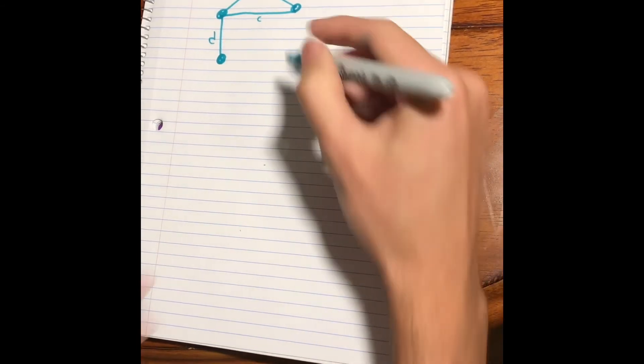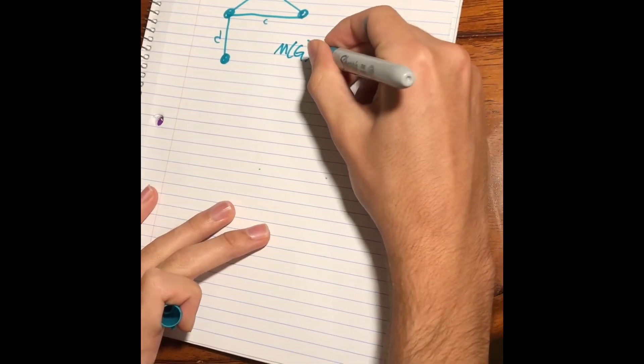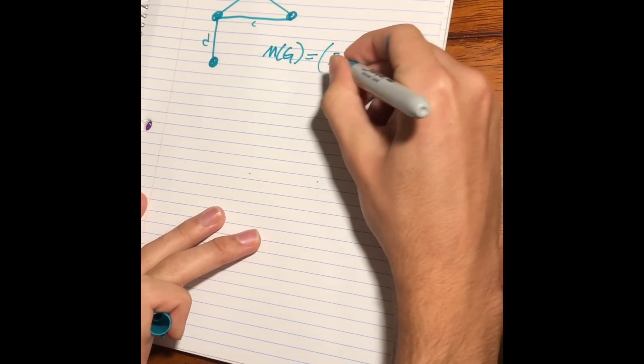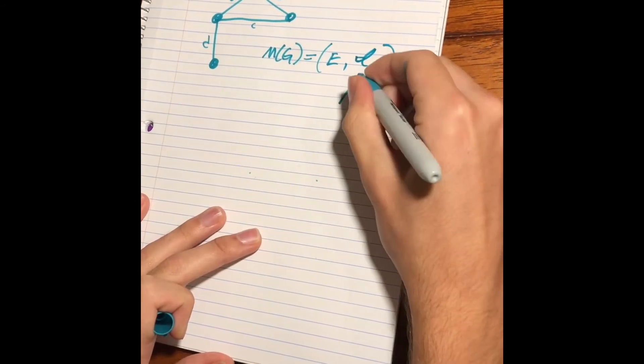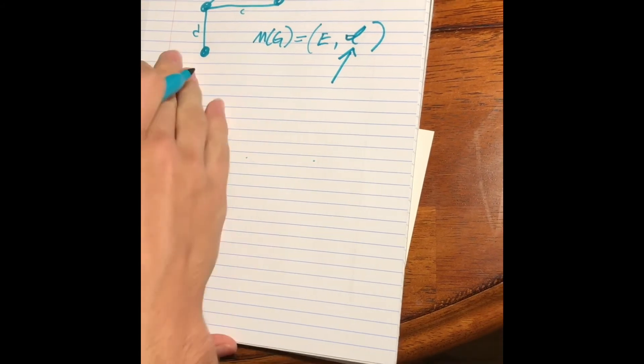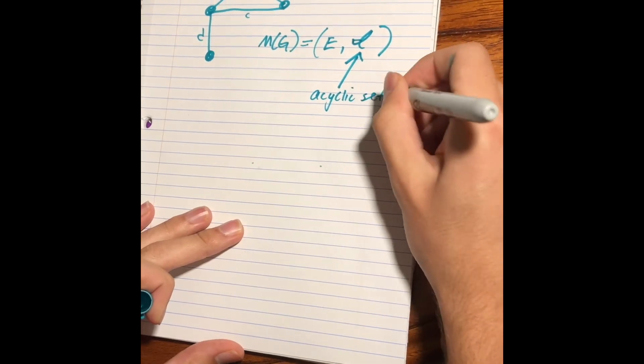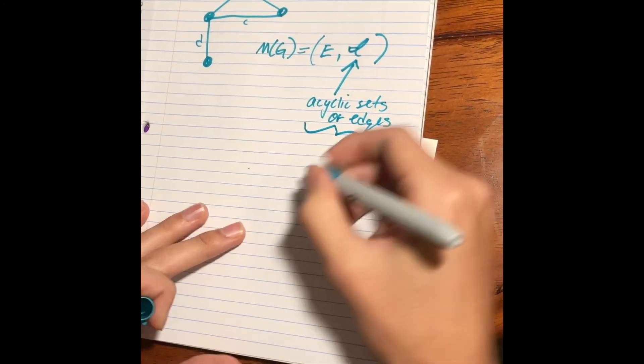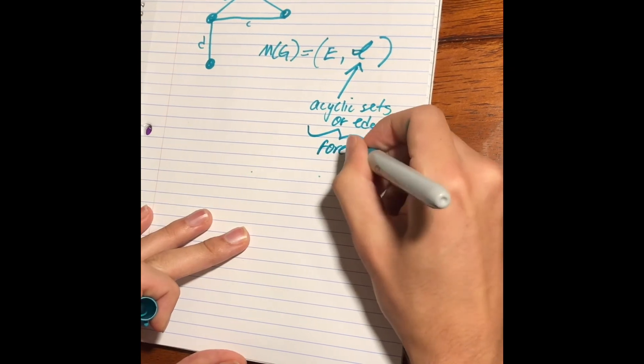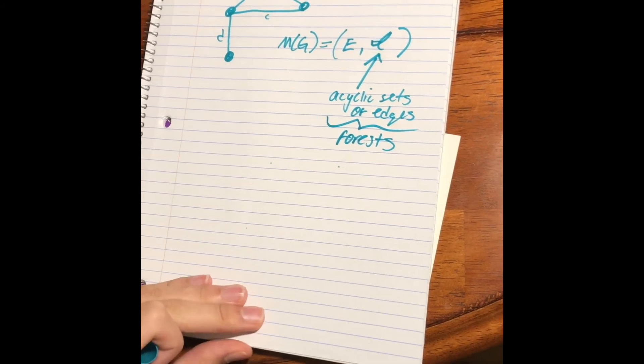So, for a graphic Matroid, we'll label this M_G. This is the graph G up here, right? Our ground set is the set of edges. And our independent sets are going to be the independent sets in the graph, meaning they're acyclic sets. Another way you could say this is that they're the forests of the graph. So, that's how we would define a graphic Matroid on a graph.